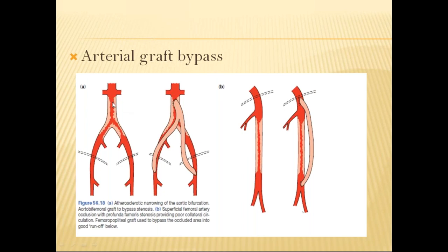You can see in the image that just above and up to the bifurcation there is plaque. A graft can be placed from proximal to the atheromatous segment to distal to it, bypassing the diseased portion.